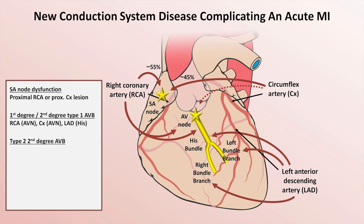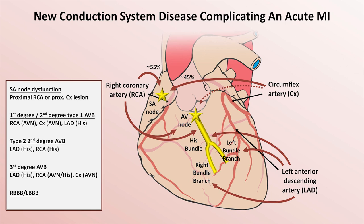However, type 2 2nd degree AV block is almost always distal to the AV node, and thus when it occurs in the setting of acute MI, it is almost always due to obstruction in either the LAD or RCA, and usually not the circumflex. The etiology of 3rd degree block can be located in either the AV node or HIS bundle. And finally, a new right or left bundle branch block is most suggestive of LAD disease.